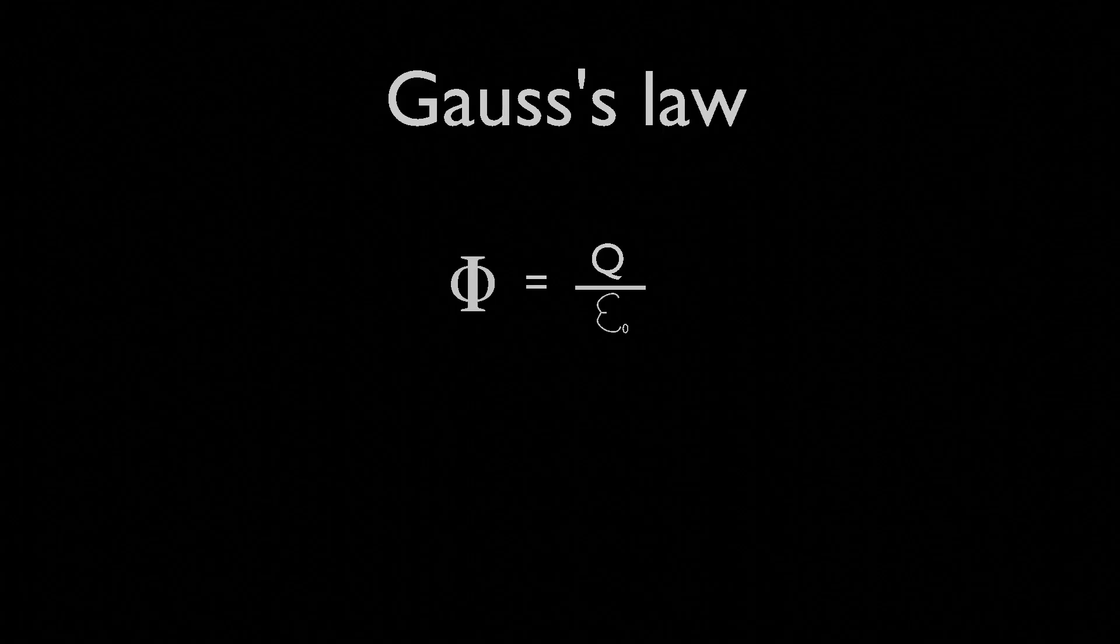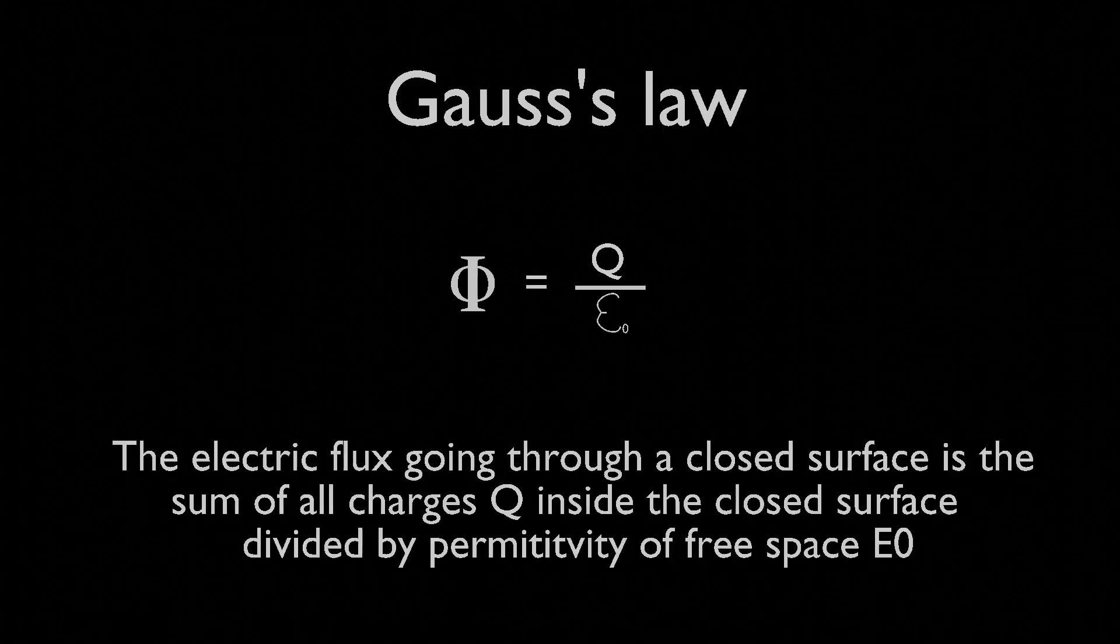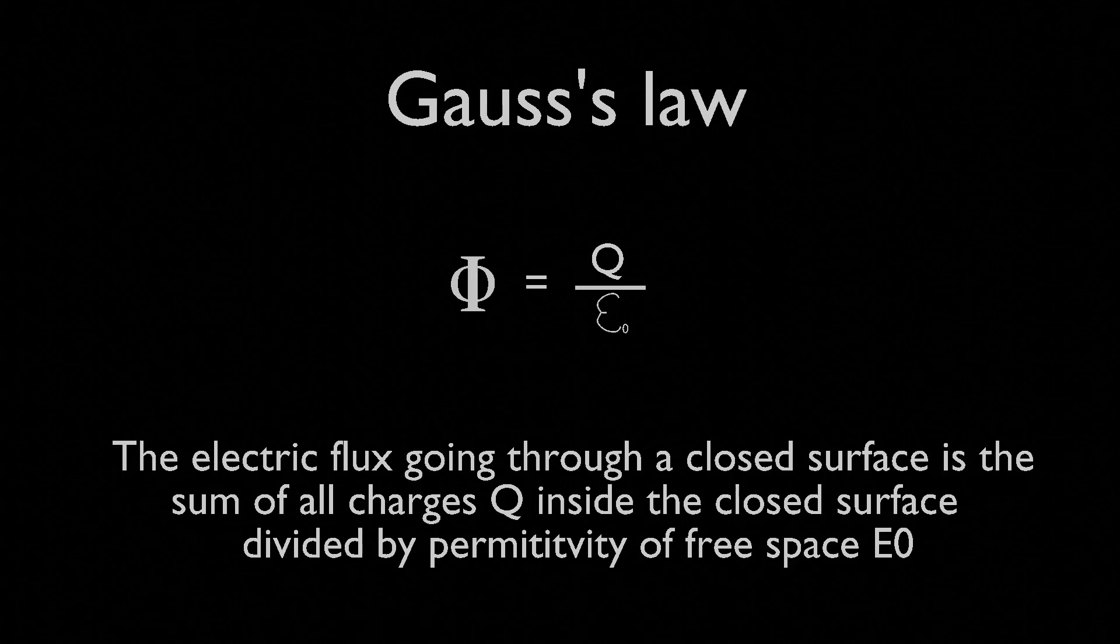Gauss's law can be defined in this way. The electric flux going through a closed surface is the sum of all charges, q inside the closed surface divided by permittivity of free space, epsilon 0.